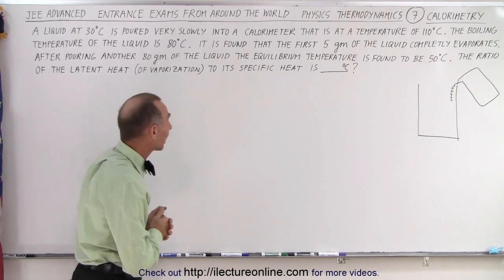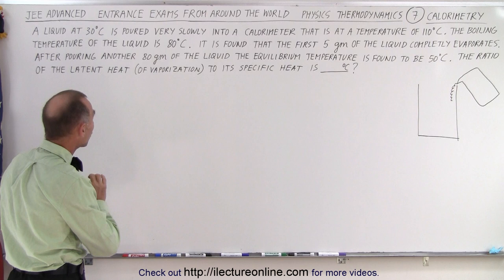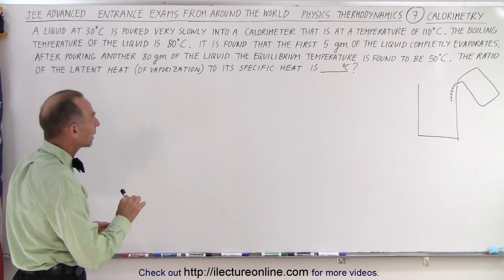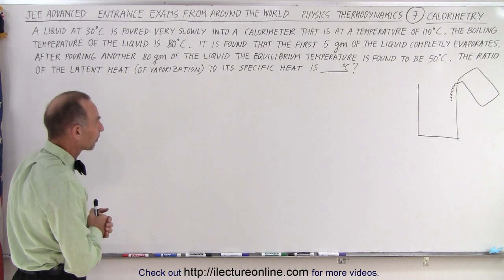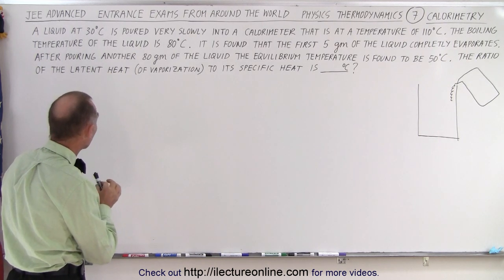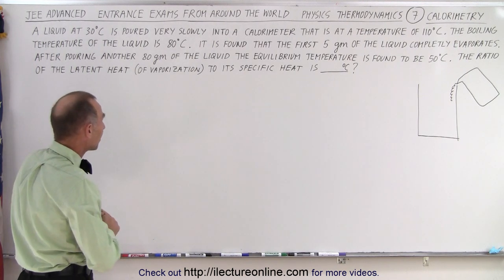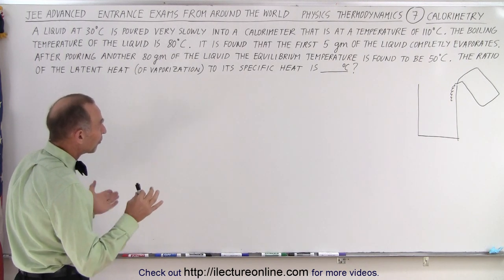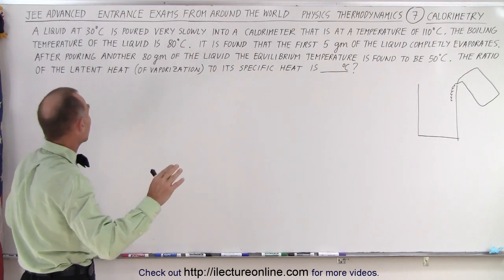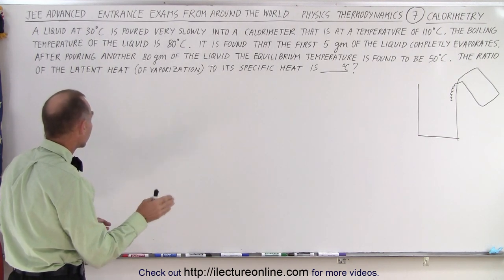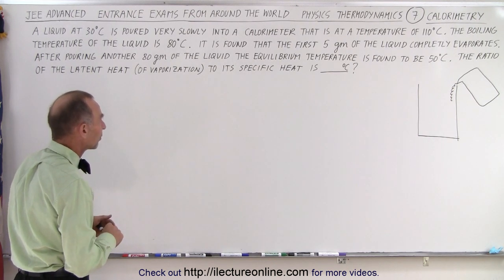Now let's read the problem together. A liquid at 30 degrees Celsius is poured very slowly into a calorimeter that is at a temperature of 110 degrees Celsius. The boiling temperature of the liquid is 80 degrees centigrade. It is found that the first 5 grams of the liquid completely evaporates. After pouring another 80 grams of the liquid, the equilibrium temperature is found to be 50 degrees Celsius.